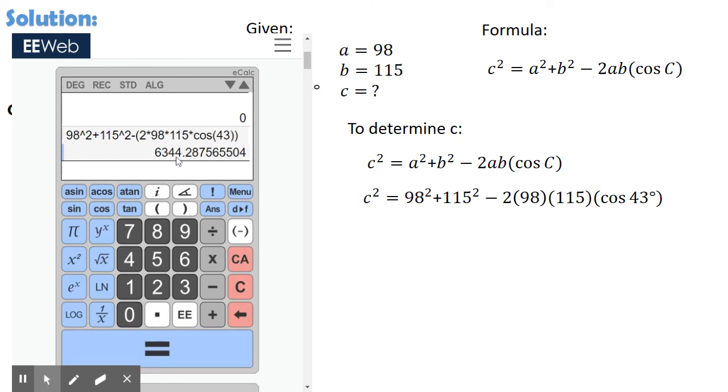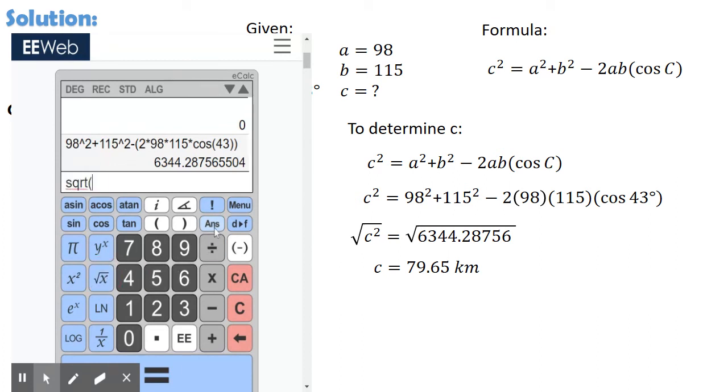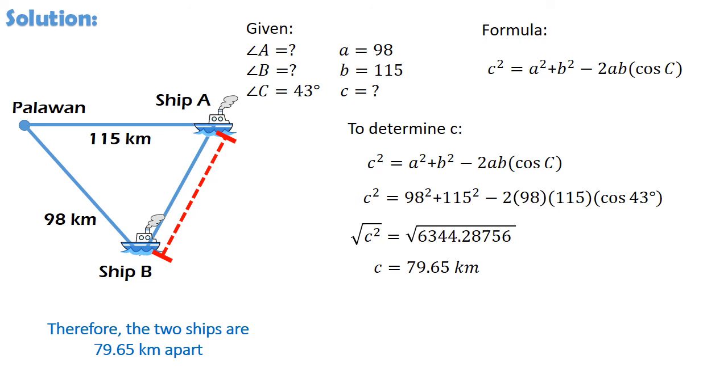Nakuha na natin ang value ng c squared. Mula rito, pwede na din natin ituloy-tuloy ang pagkuha ng square root para ma-determine ang value ng c. Mula doon, sa na-compute natin kanina, pindutin lang natin yung square root button. Kaya ang sagot natin ay 79.65 rounded off to the nearest hundredths. At dahil side ang hinahanap natin, huwag kalimutan ang unit of measurement na ginamit sa problem. Kaya ang value ng c is equal to 79.65 kilometers. Therefore, ang layo ng ship A sa ship B ay 79.65 kilometers.